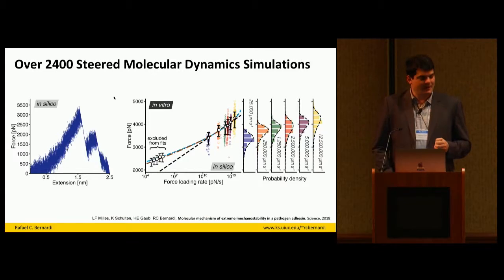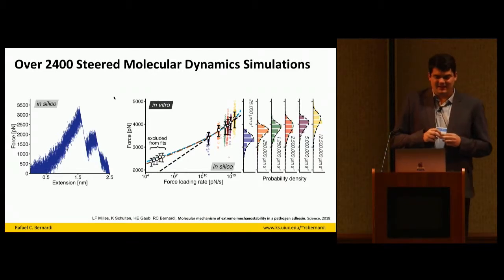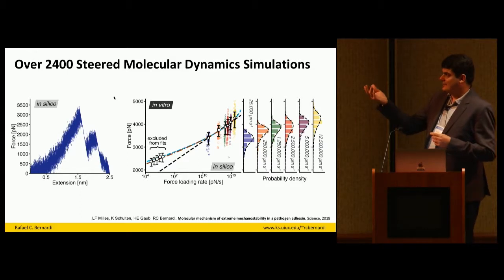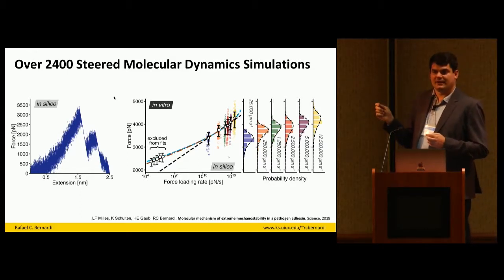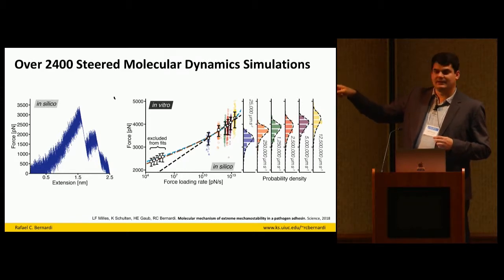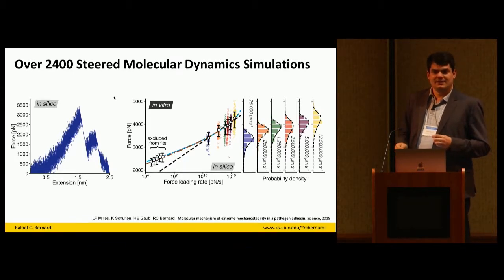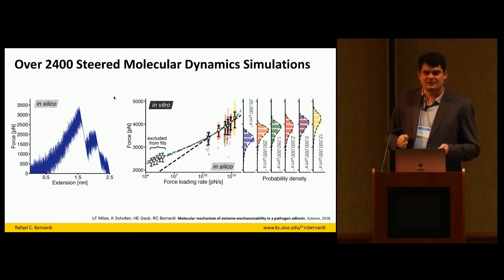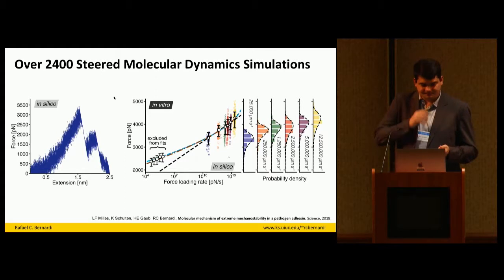That's where Blue Waters came in — we started doing a lot of replicas and tests. In the plot I'm showing you, the right-hand side is all computational data and the left-hand side is experimental data. The experiment was excluded from the fit, and all the simulation data fits perfectly over the experimental data. So we could reproduce exactly what they were doing, and now being 100% sure we were doing it correctly, we could go ahead and try to understand what is happening in the system.